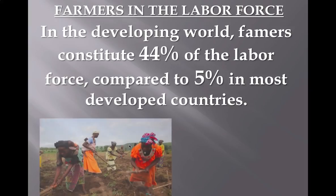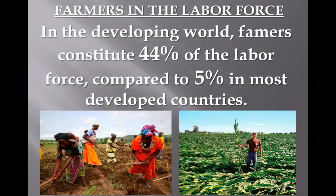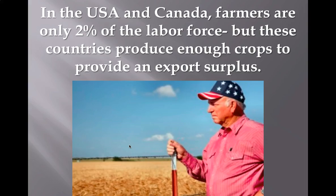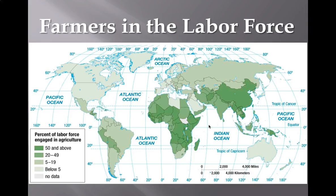There are plenty of characteristics separating subsistence from commercial agriculture. Commercial agriculture uses a lot of machinery and has big farms; subsistence uses hand tools, smaller farms, with many families working. In commercial farms you won't have as many farmers, whereas in the developing world a lot of people work in agriculture. About 44% of the labor force in the developing world works in agriculture. In the United States we're at about 2%, and in the rest of the developed world about 5% of the population works in agriculture.